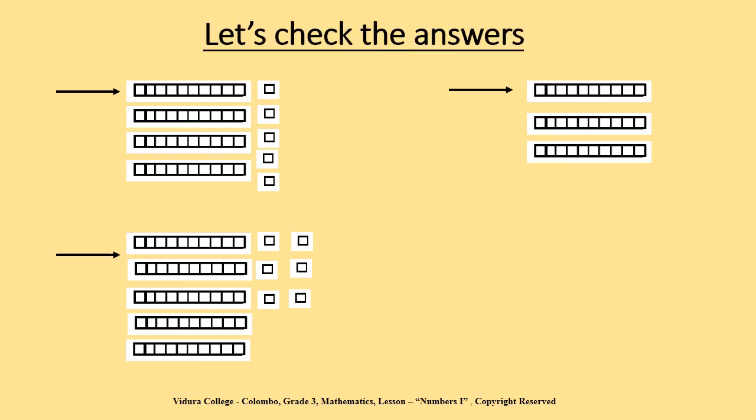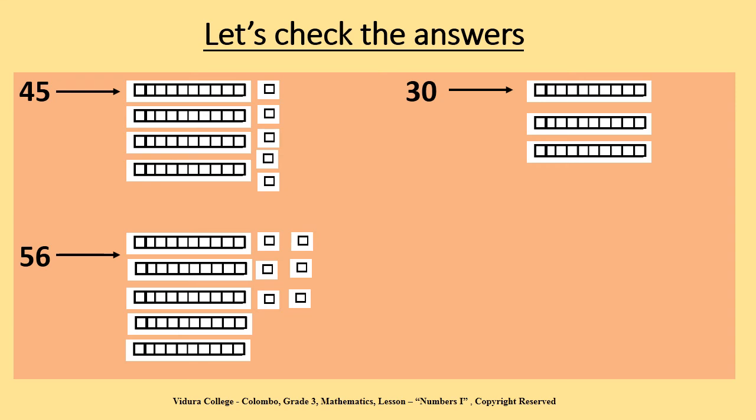Children, are you ready to check your answers? To represent 45, you need four rods and five blocks. To represent 56, you need five rods and six blocks. And finally, to represent 30, you need only three rods and zero blocks, since the units place value of 30 is zero.